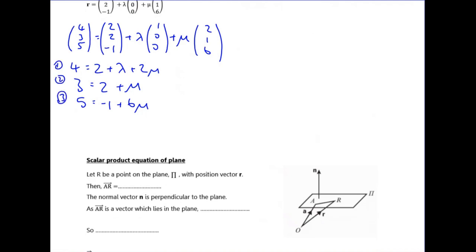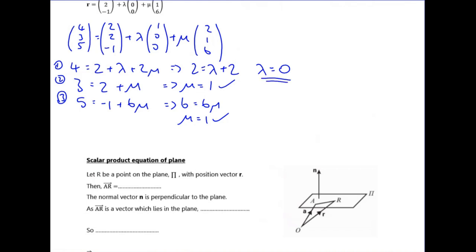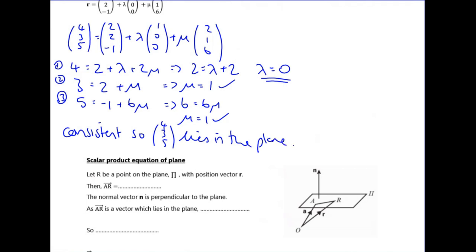From equation two, mu equals 1. Checking with equation three: substituting gives a consistent result. Then from equation one, subtracting the 2 across and substituting mu = 1, we get 2 = lambda + 2, so lambda = 0. The key is that you use two equations to find lambda and mu, then check consistency in the third. Since they're consistent, the point (4,3,5) lies on the plane.